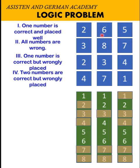Then let's go back to our first statement. One number is correct and is placed well. Since 2 is already eliminated, this 2 could not be here. So 2 is also eliminated. So based on statement number 1, 6 and 5 could still be our candidates.